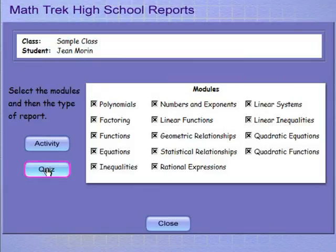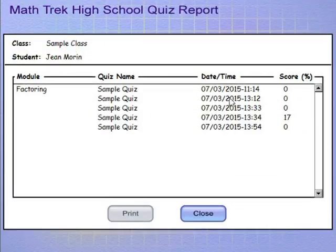All the tests we did will be listed. The test we just did now - we did a test on factoring - shows the date, the time we did the test, and we had zero percent.